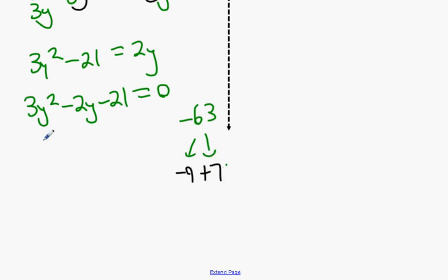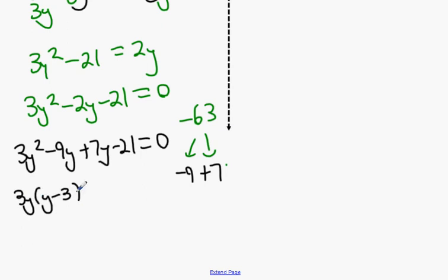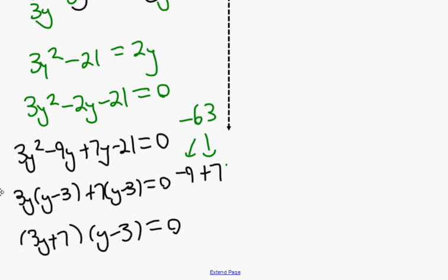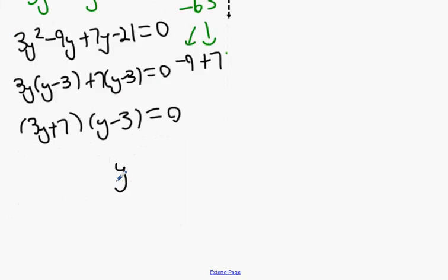We're going to get 3y squared minus 9y plus 7y minus 21 equal to 0. We're then going to get 3y bracket y minus 3 plus 7 bracket y minus 3 equal to 0. 3y plus 7 bracket y minus 3 equal to 0. y equals 3 or y is going to equal minus 7 over 3.